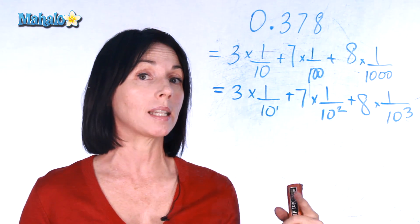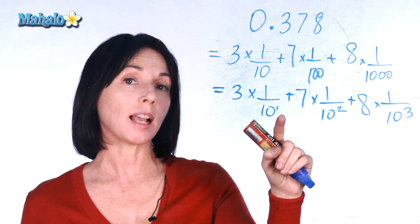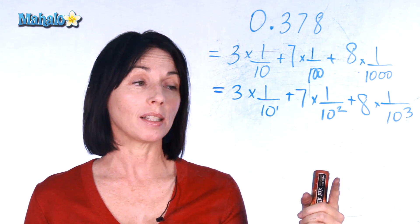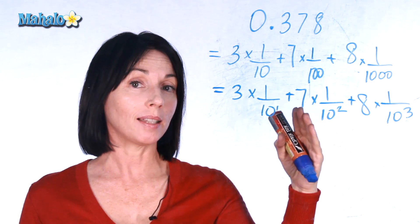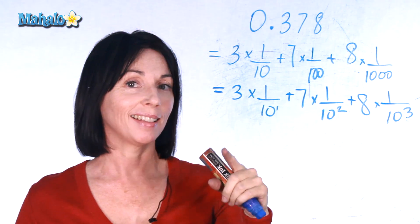But we can actually go one step further and change these exponents to negative exponents. And then instead of dividing by 10 we'll be multiplying by 10 raised to a negative power. And this is how it looks.